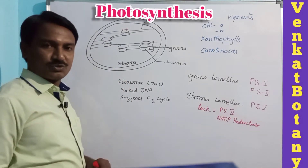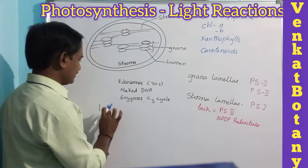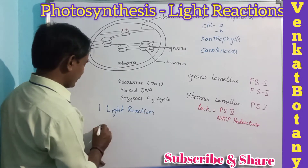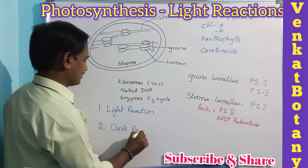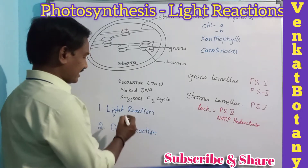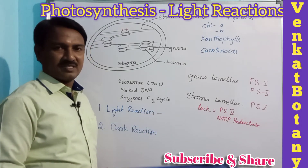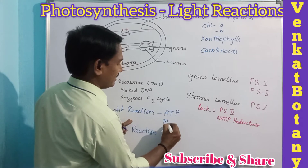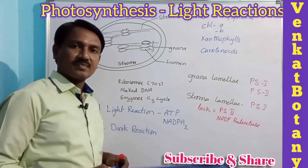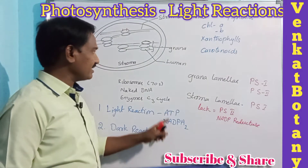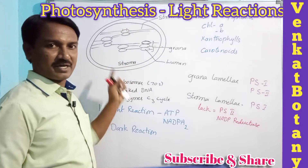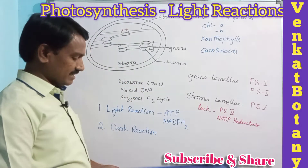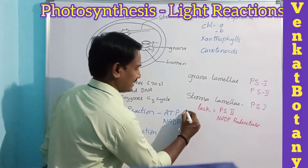In photosynthesis, there are two types of reactions: the light reaction and the dark reaction. Light reactions occur in the presence of sunlight. By utilizing light, they produce ATP and NADPH2, which are useful in the Calvin cycle. The Calvin cycle occurs in the stroma.